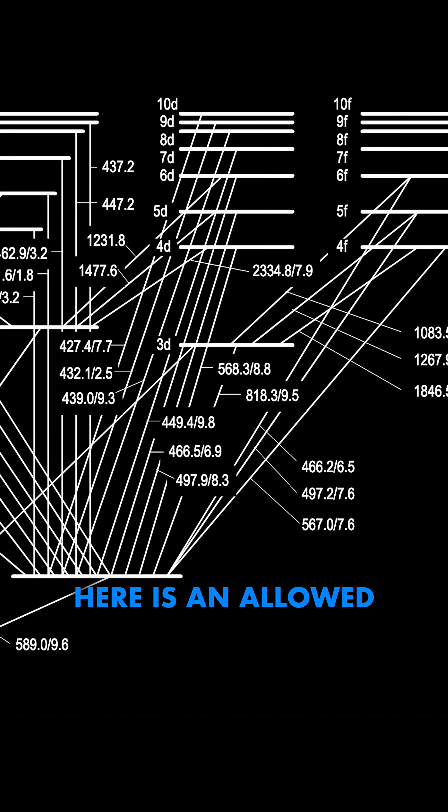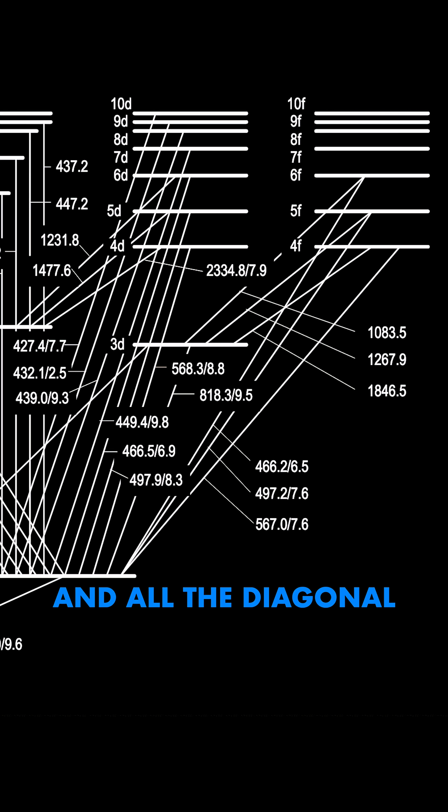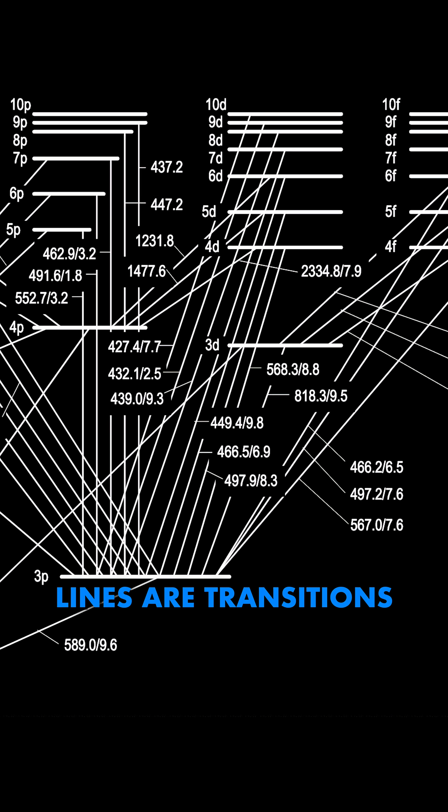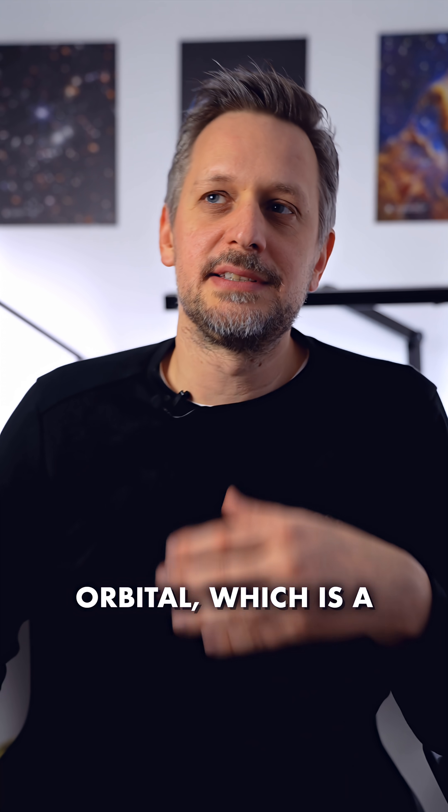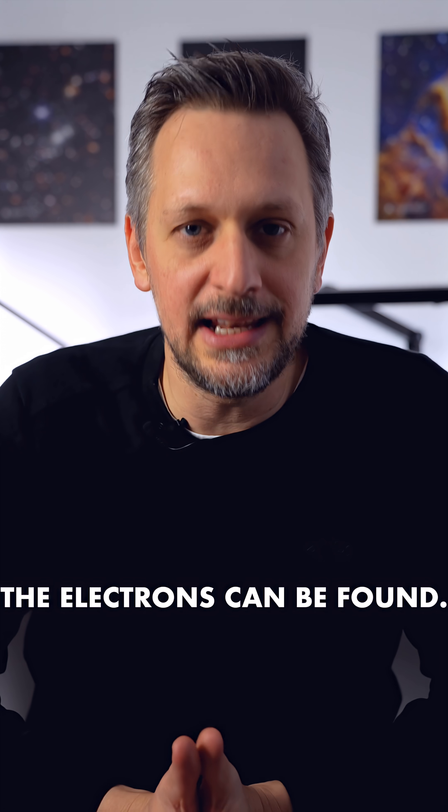Every horizontal line here is an allowed energy level and all the diagonal lines are transitions between those states. Each of those energies correspond to an orbital, which is a shell of the atom where the electrons can be found.